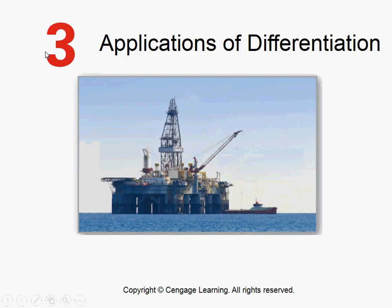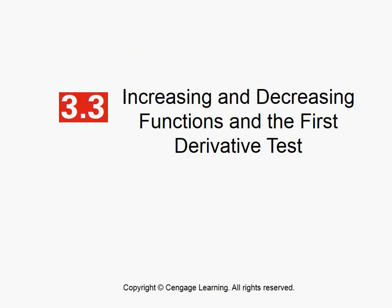We're going to start with Chapter 3, Ulrich, 3.3, Increasing and Decreasing Functions and the First Derivative Test. You can't do the Ulrich anymore, because I'm going to be thinking of oxidation reduction and black holes.